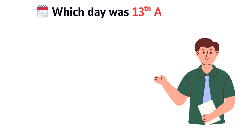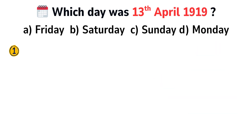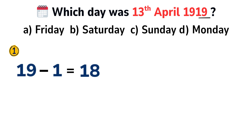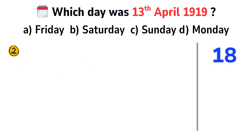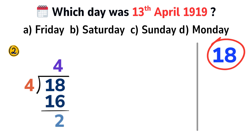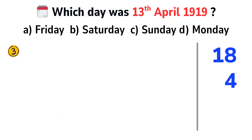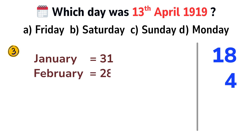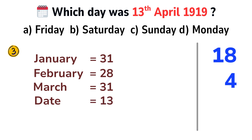Let's check another question. Which day was the 13th of April 1919? Focus on the last two digits: 19. Subtract 1: 19 minus 1 equals 18. To find the number of leap years, divide 18 by 4 — 4 times 4 equals 16, so we get 4. Then find total days from January: January 31 days, February 28 days (since 1919 is not a leap year), March 31 days, plus the date 13. That gives a total of 103 days.